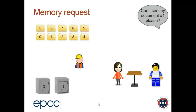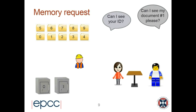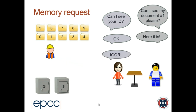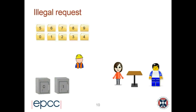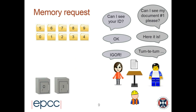If I want to make a memory request, I go to the legal office and say 'Can I see my document number one please?' There has to be authorization — the lawyer asks for my ID, I show it, she's satisfied, and she asks the clerk Igor to go get the document from the filing cabinet. This takes quite a lot of time. Igor gets the file, comes back, and delivers a copy to me. That's how a legal request goes.